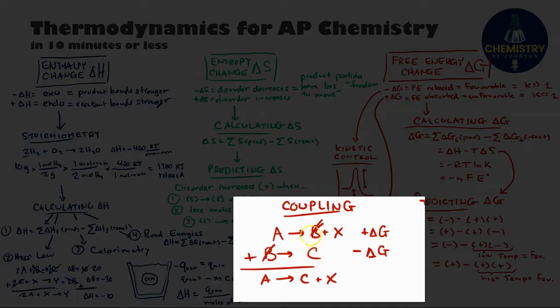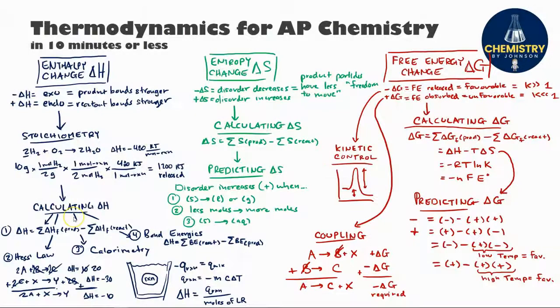Via Hess's law, I can see that the net overall reaction would produce this particle X that I'm interested in, and that coupling will be effective as long as when I add up those two delta G values, I get a negative delta G for my overall reaction. And that wraps it up for Thermodynamics for AP Chemistry in 10ish minutes or less. Thanks for watching.